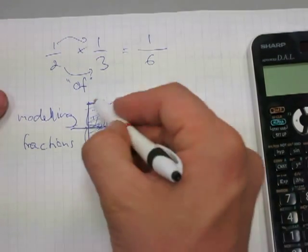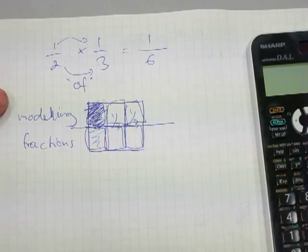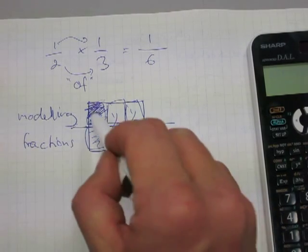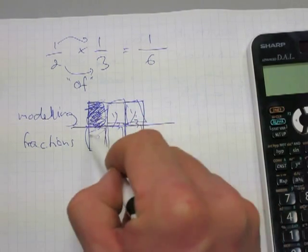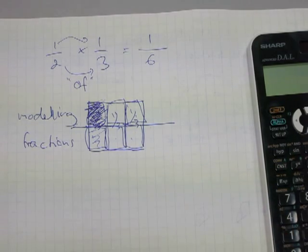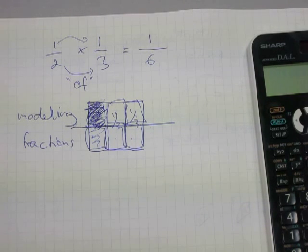By halving all of the thirds, how many pieces did we create? We created one, two, three, four, five, six parts. One-half of one-third is the super heavily cross-hatched part. We now have six parts to the whole, and one-sixth is one-half of one-third. That's modeling fractions.